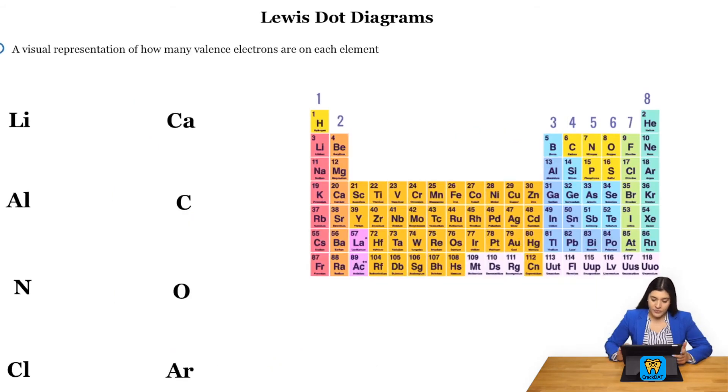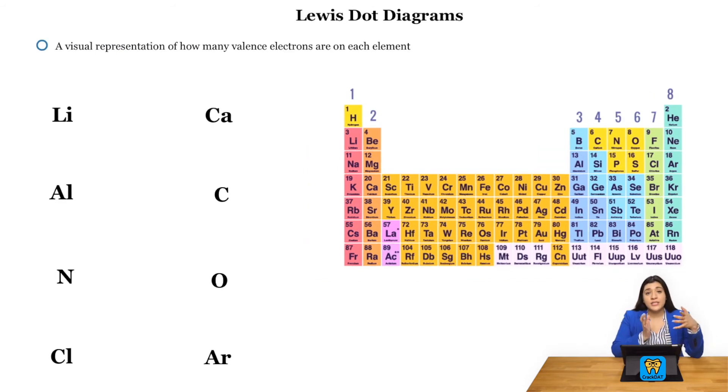Moving on to Lewis dot diagrams. These are just a visual representation of the element and how many valence electrons are on that element. Looking at, let's say, lithium - lithium is in the first group so it only has one valence electron. So I will just place one valence electron on lithium.